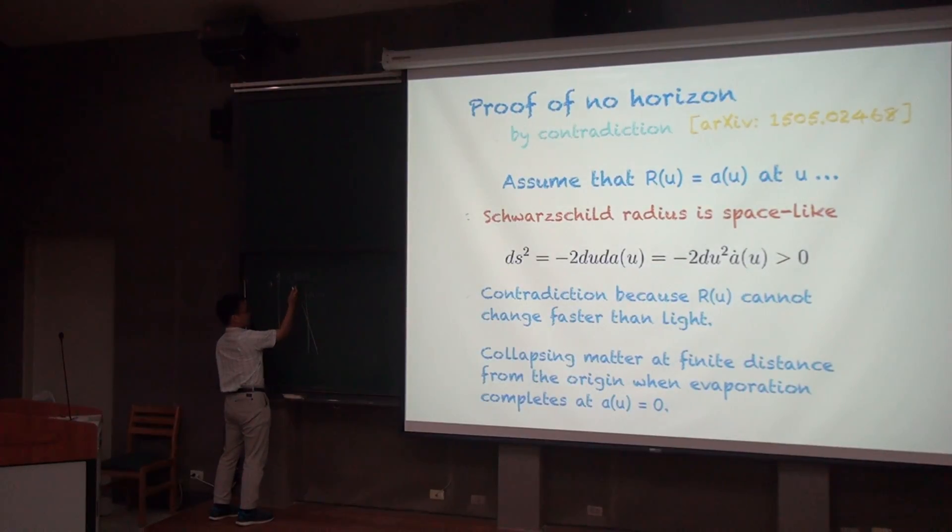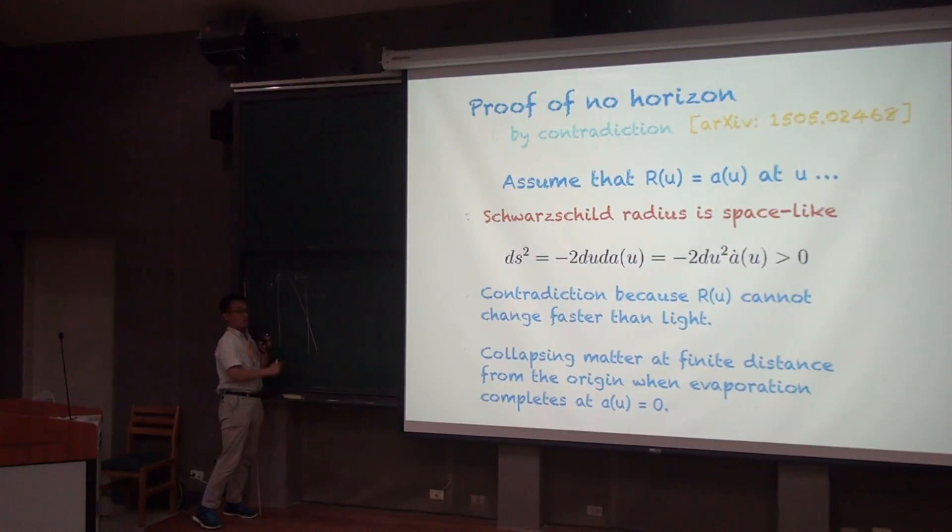After this point, A is larger than R, so I can use the outgoing Vaidya metric. And I can check whether this curve is space-like or light-like by plugging in R equal to little A. And I see that it's always space-like, namely this part is always space-like, including this point. But that's impossible.